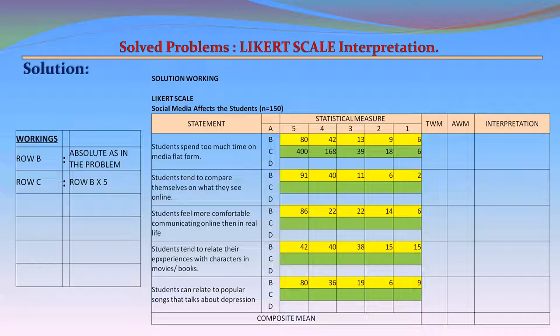Row C in each statement is calculated as Row B multiplied by the scale value. For Statement 1: 5×80=400, 4×42=168, 3×13=39, 2×9=18, 1×6=6. For Statement 2, Row C is: 5×91=455, 4×40=160, 3×11=33, 2×6=12, 1×2=2.